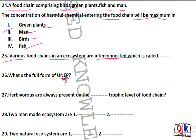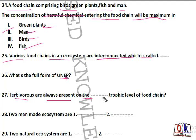UNEP stands for United Nations Environmental Program. Question 27: herbivores are always present on which trophic level? First trophic level belongs to producers, then herbivores come. They are at the second trophic level.